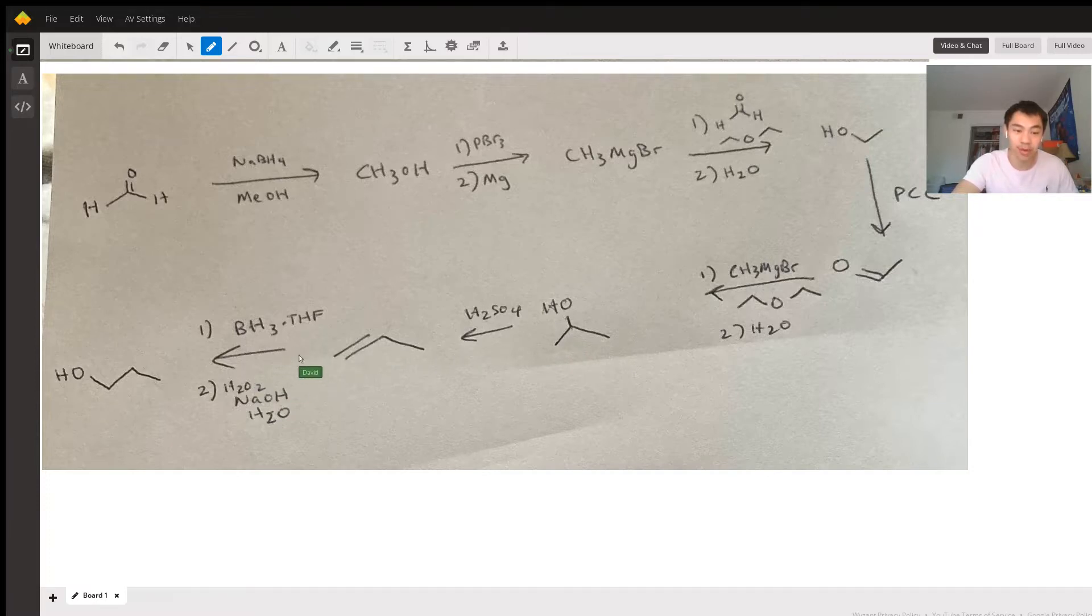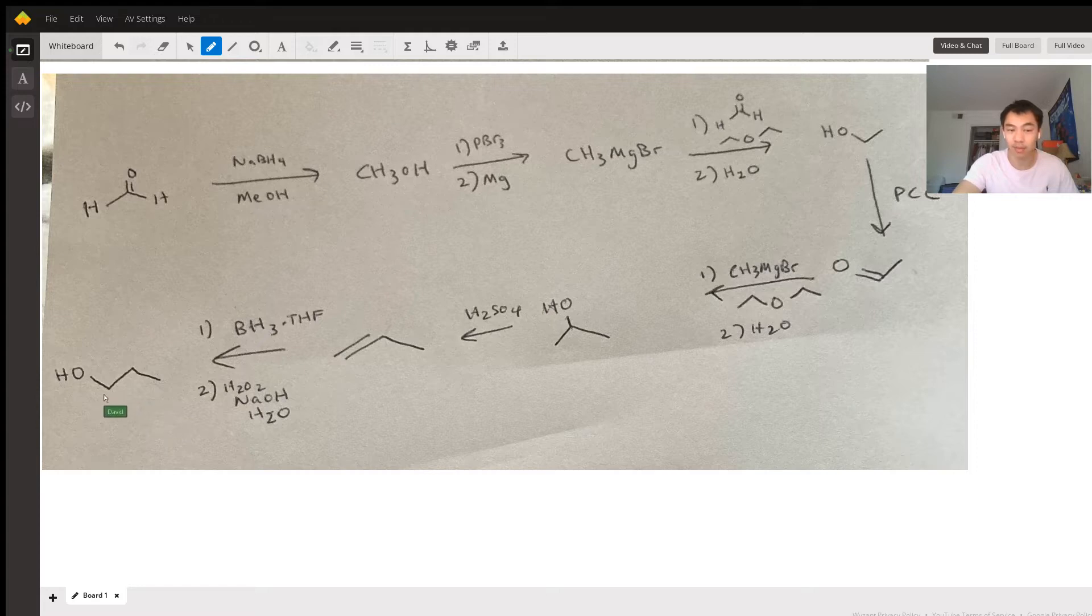Then you use hydroboration to change the OH position from the more substituted side to the least substituted side. That's the whole point of hydroboration. That's how you end up getting 1-propanol.